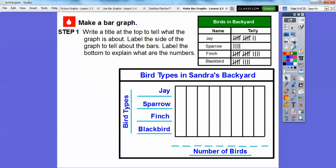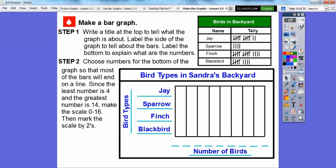The next step is to choose the numbers for the bottom of the graph so that most of the bars will end on these lines. Let's take a look at these numbers. The smallest number is 4 and the greatest number is 14, so let's make these go by 2.